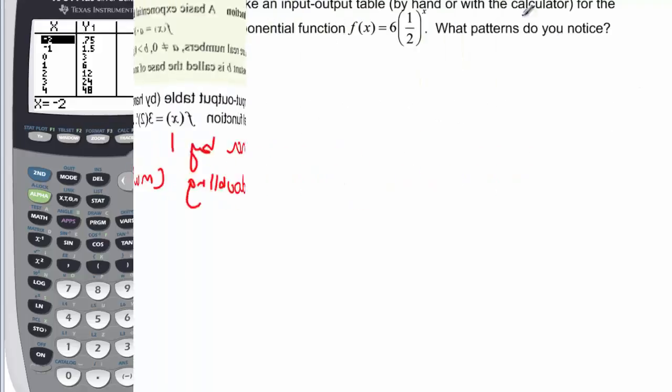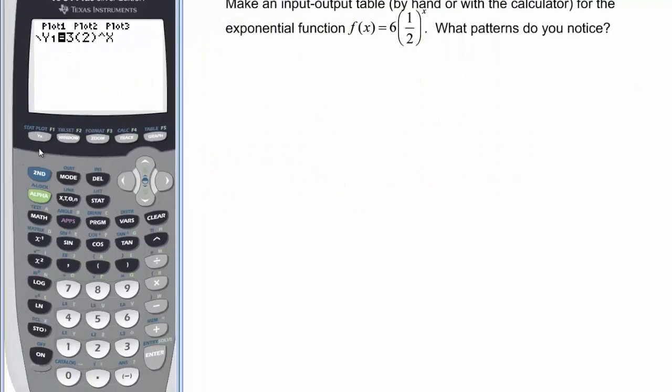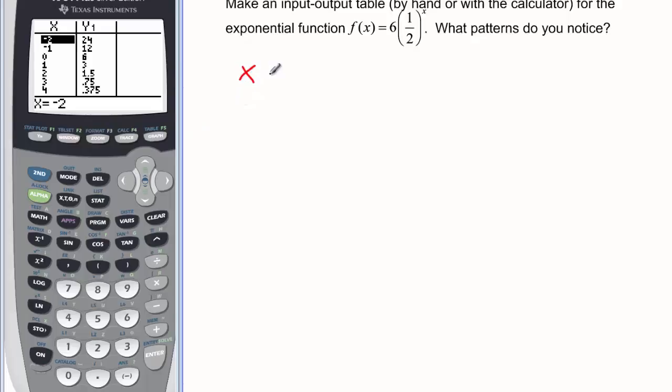Let's look at another example. Now we want to look at this function and see if we can see the patterns that happen here. So we need to clear this one out and put in 6, and then in parentheses I'm just going to put 0.5 for that one-half, close the parentheses, caret x, and then go look at my table again. And this time again, let's look at x and see what's happening. X is again increasing by one.